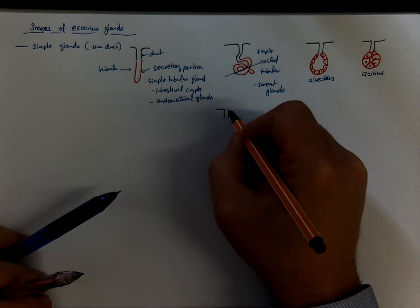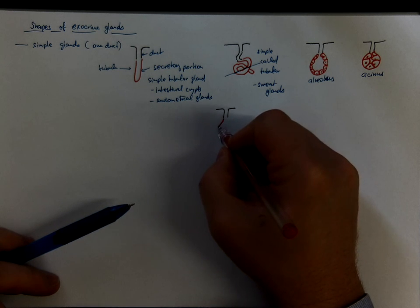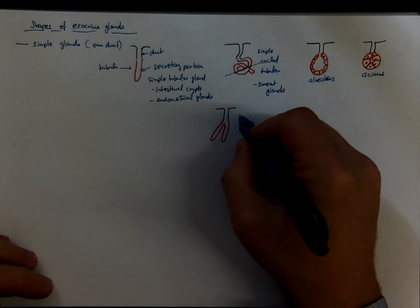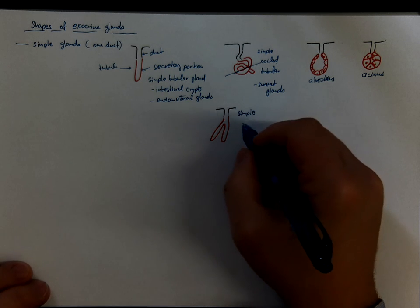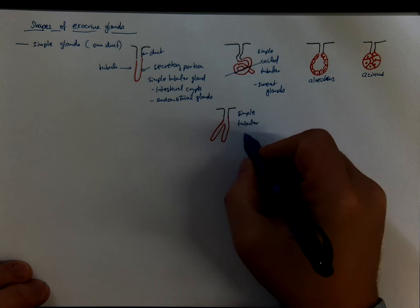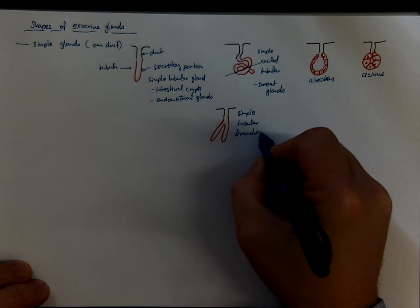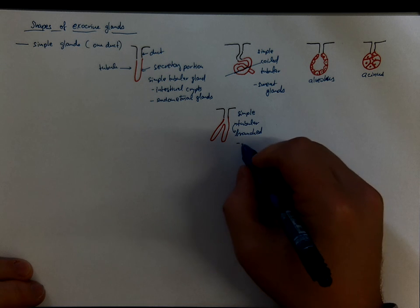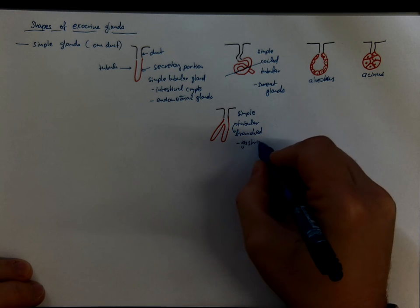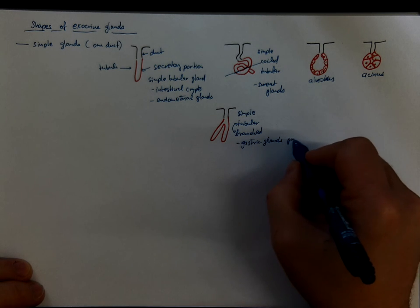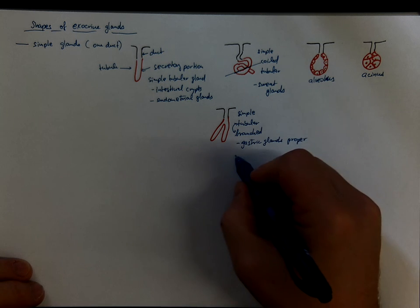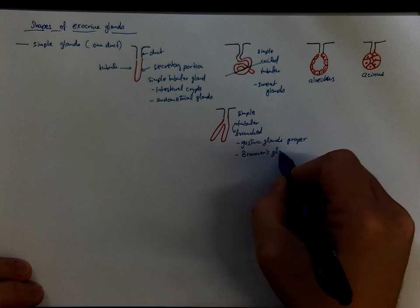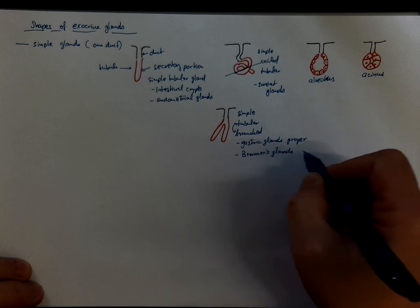If there is only single duct but the secretory portion is branched such as in this tubular example you call it simple tubular branched or simple branched tubular perhaps. This is how the gastric glands look like, gastric glands proper in the fundus and in the body of the stomach or how the mucus Brunner's glands of duodenum look like.